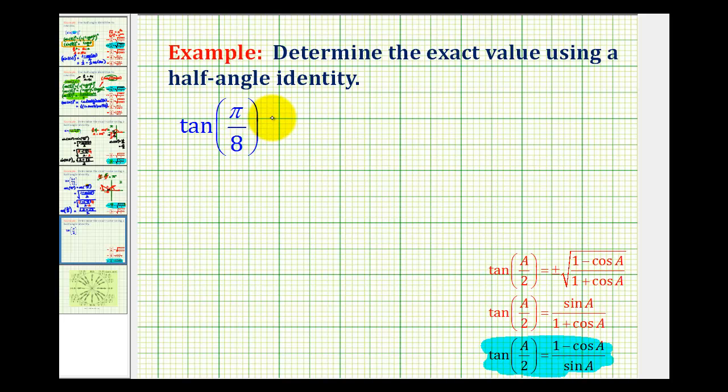I think it's usually easier to apply these identities if our angle is in degrees. So let's start by converting π/8 radians into degrees. We'll multiply it by 180 degrees divided by π. Notice how the π's simplify out.